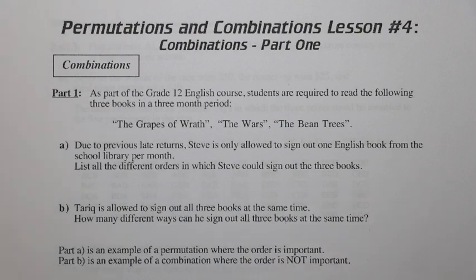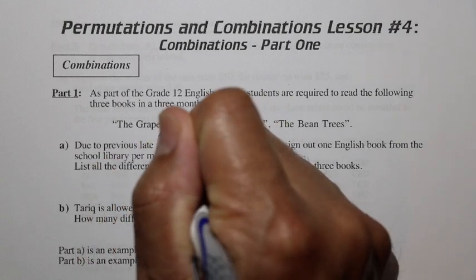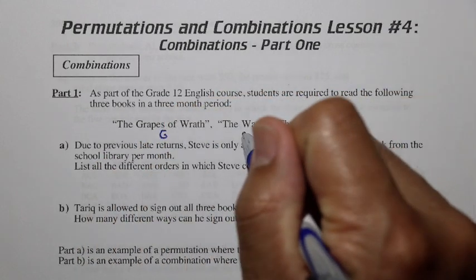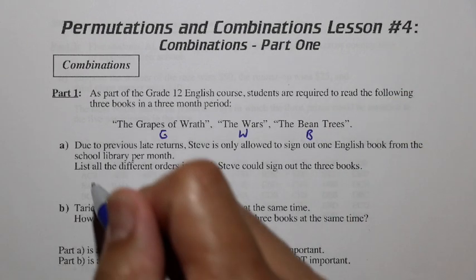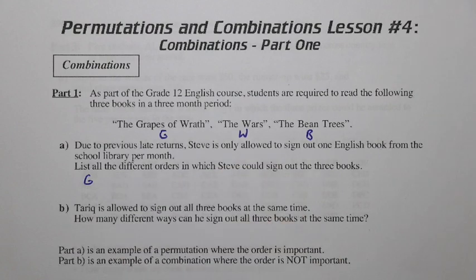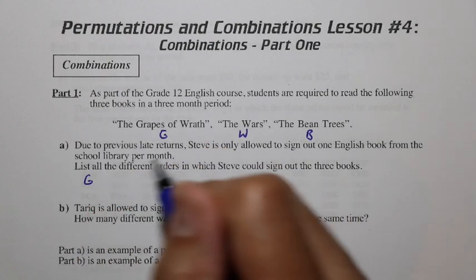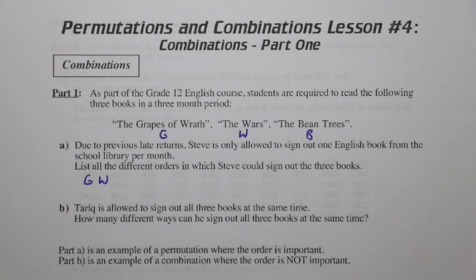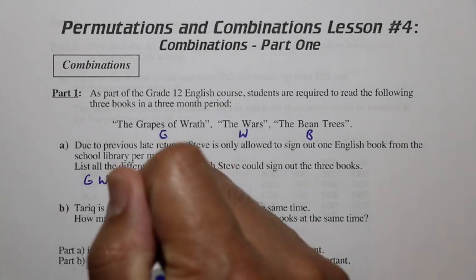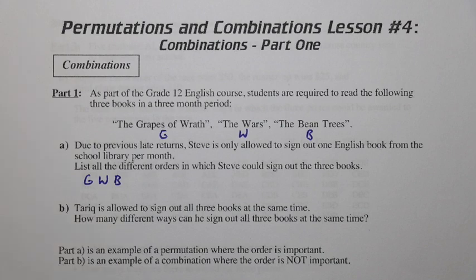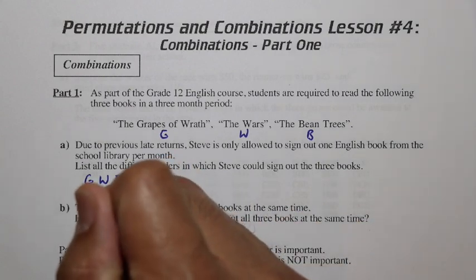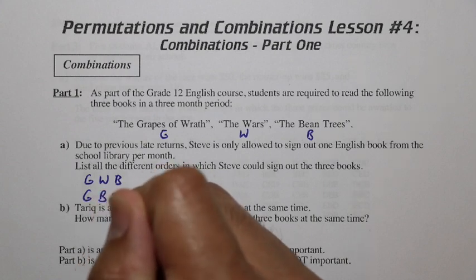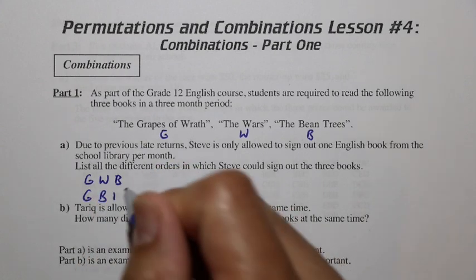Well, one day he can walk in and get The Grapes of Wrath. If we say Grapes of Wrath is denoted by G, W for Wars, and B for Bean Trees — first he goes in and gets Grapes of Wrath, then the next day he comes in and gets Wars, and then the next day after that he gets The Bean Trees. That's one order. Or, in a parallel universe, Steve could sign out the books a different way: first Grapes of Wrath, then Bean Trees, then Wars.